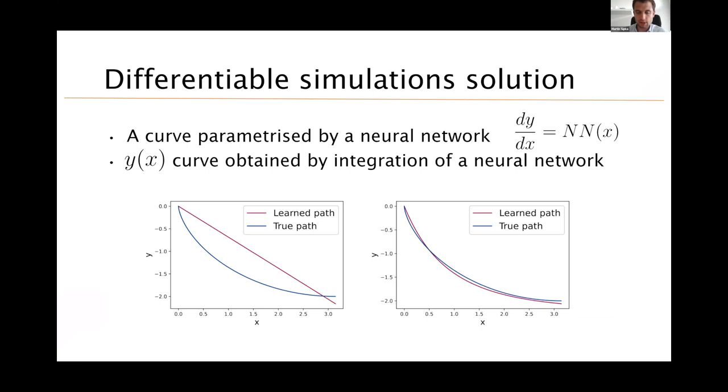So here we can see how a brachistochrone solution looks like using these differentiated simulations. The true path is an analytical solution, which is well known. The learned path in the left picture is just an initial guess of a straight line. And in the right picture, we can see the learned path, which means after, let's say, 100 episodes of iteration of just running the simulation and backpropagating it, running it again and backpropagating it in a loop.